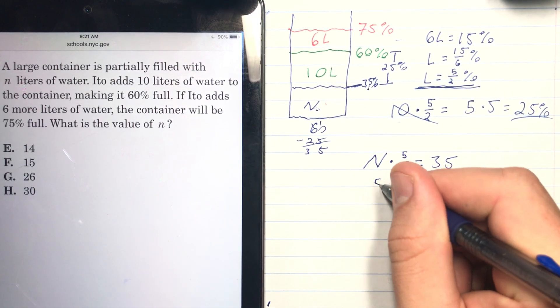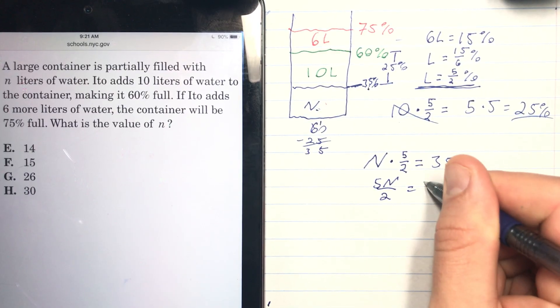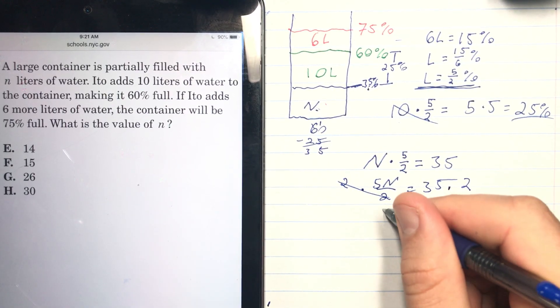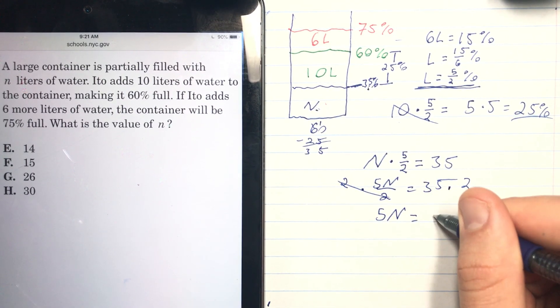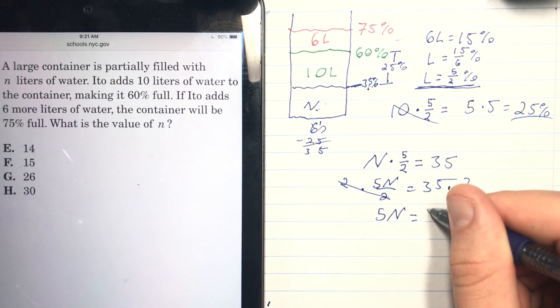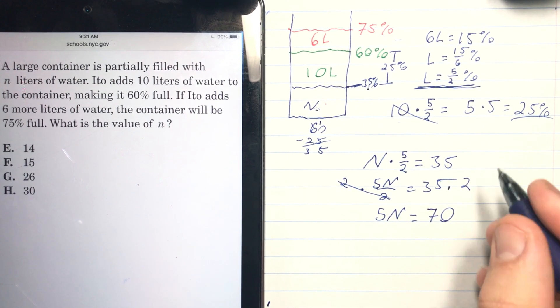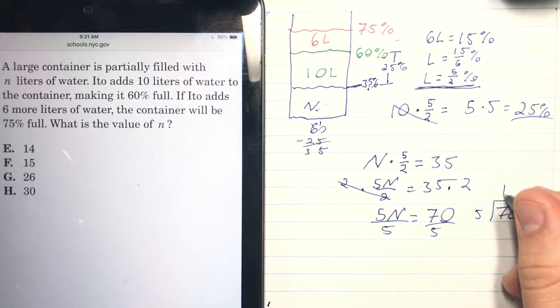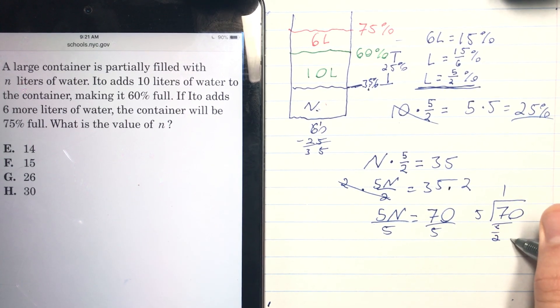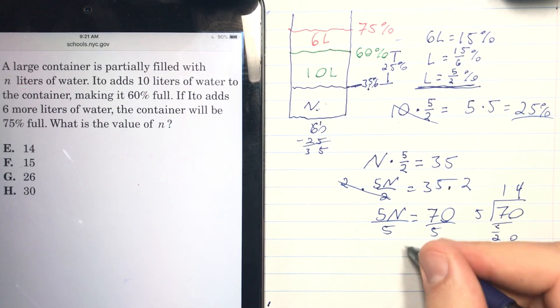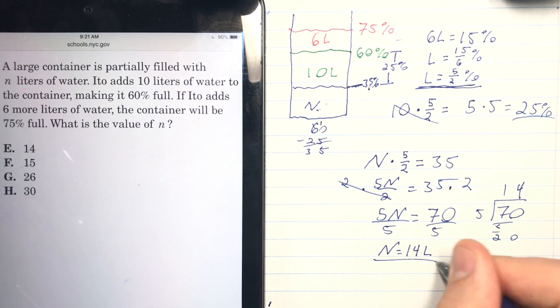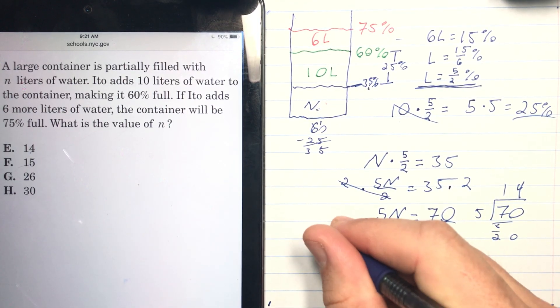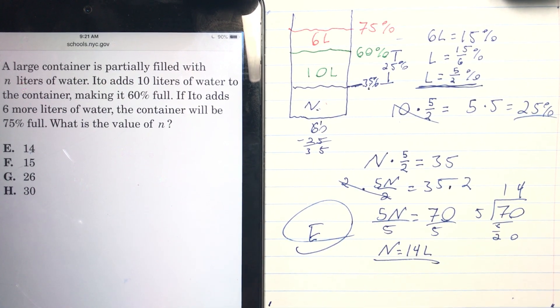Now we need to figure out how many liters of water that is. We're going to use this number once again, because n, the amount that's in there, times how much percentage each liter is, will equal 35%. So that means 5n/2 equals 35. The first thing we do is multiply each side by 2, so then 5n equals 70. Now we divide both sides by 5 to get n by itself, and 70 divided by 5 is 14. So that means that n is 14 liters. That's our answer, and that is E.